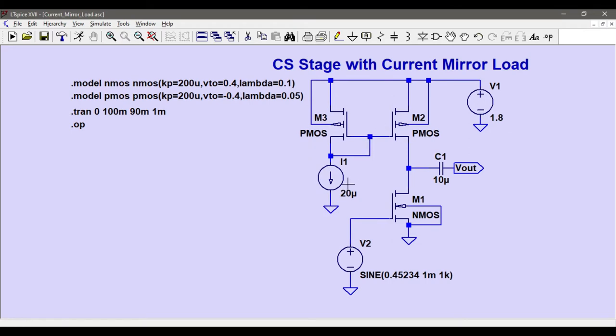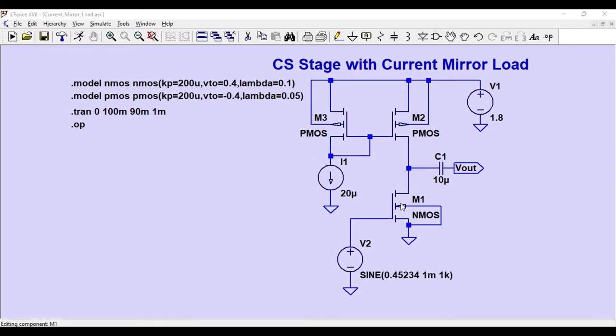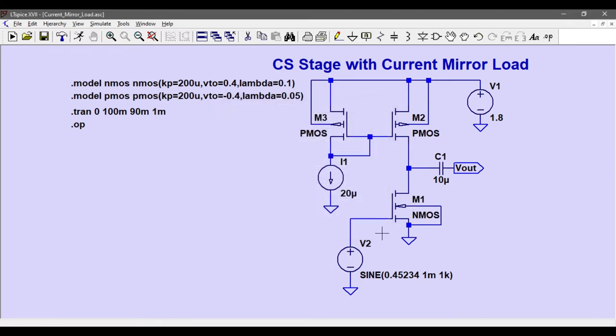So what I am going to achieve is 20 micro ampere current will be copied to the circuit. But is it going to happen directly? No, it's not going to happen directly because this MOSFET, the NMOS, has to draw that current. So how are we going to achieve that? We need to calculate the W by L ratio and also the VGS voltage which we have to give to this MOSFET so that it can draw the 20 micro ampere current and this can achieve the required gain.